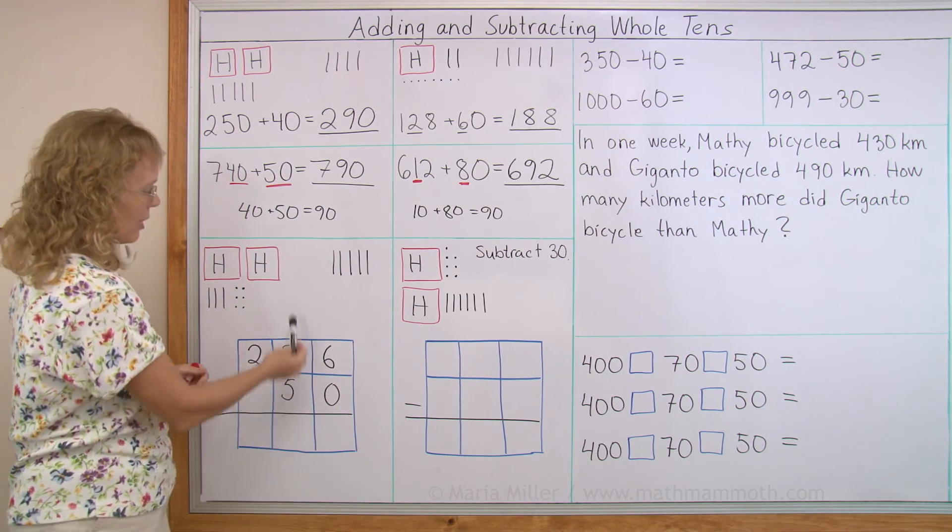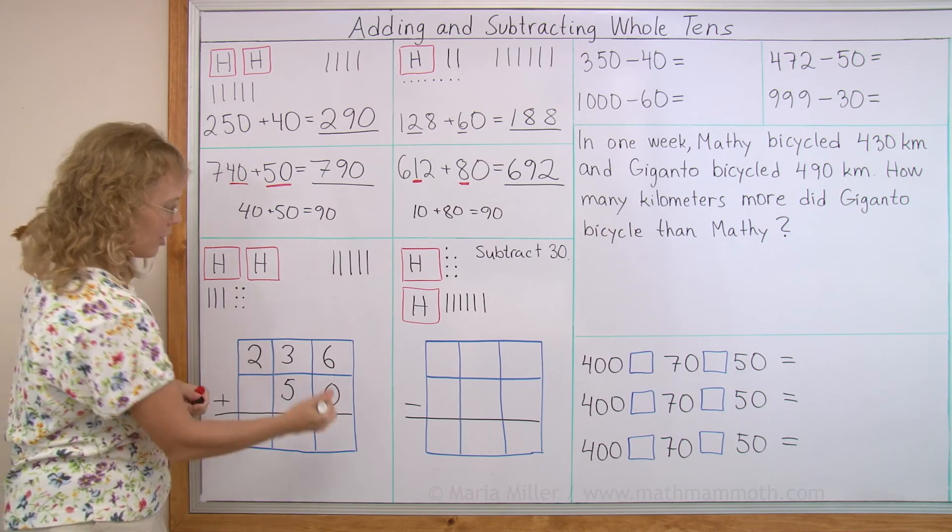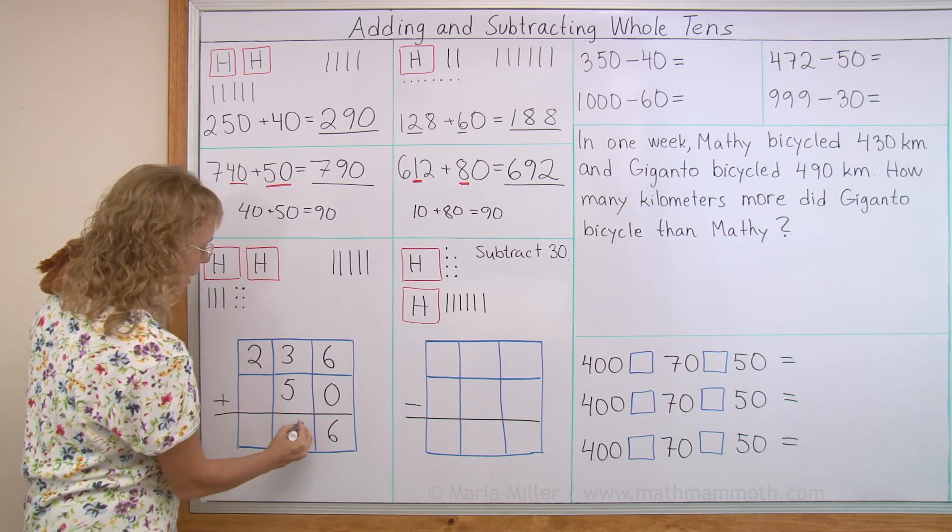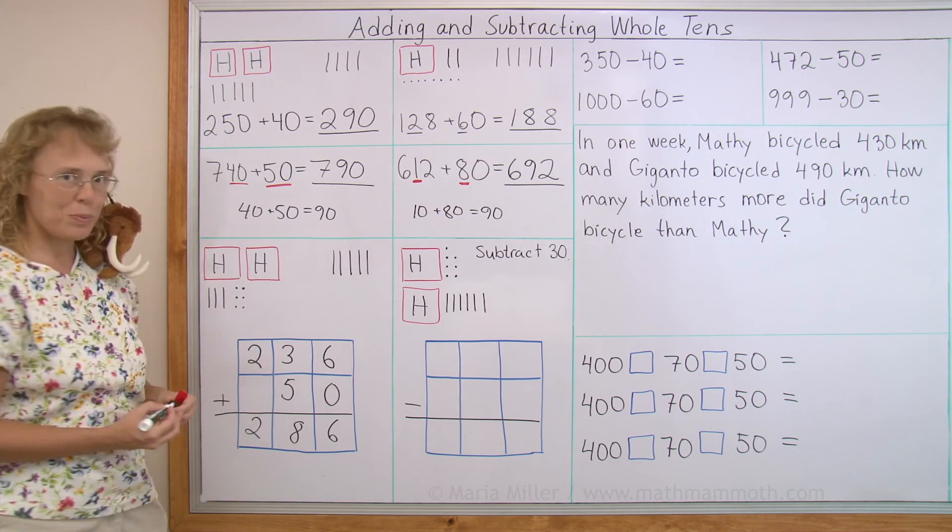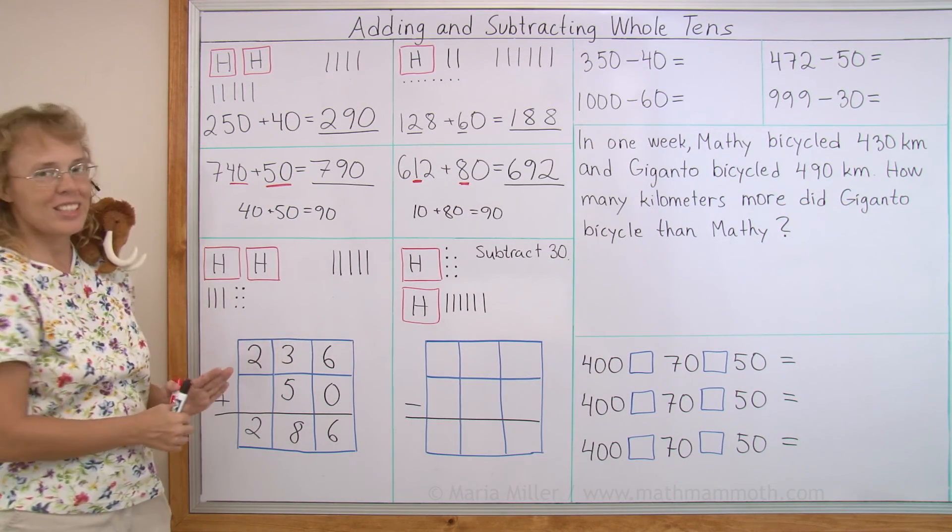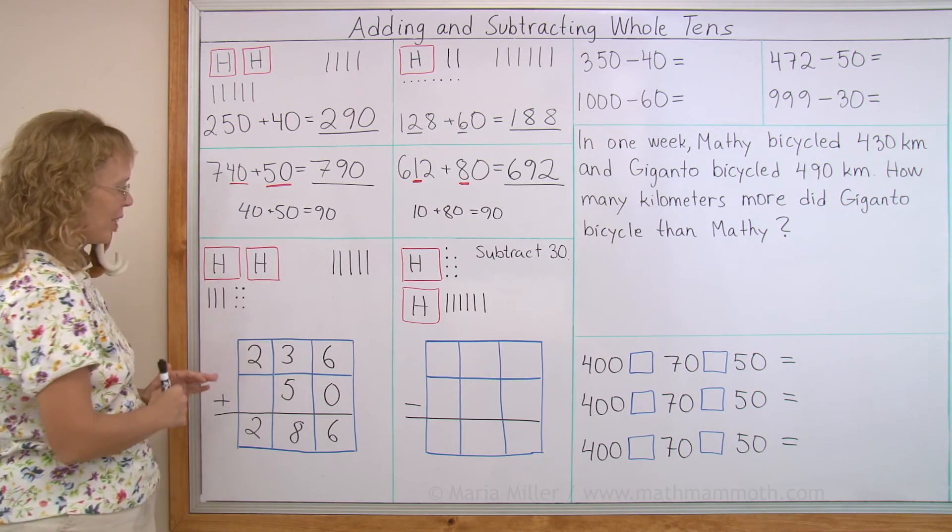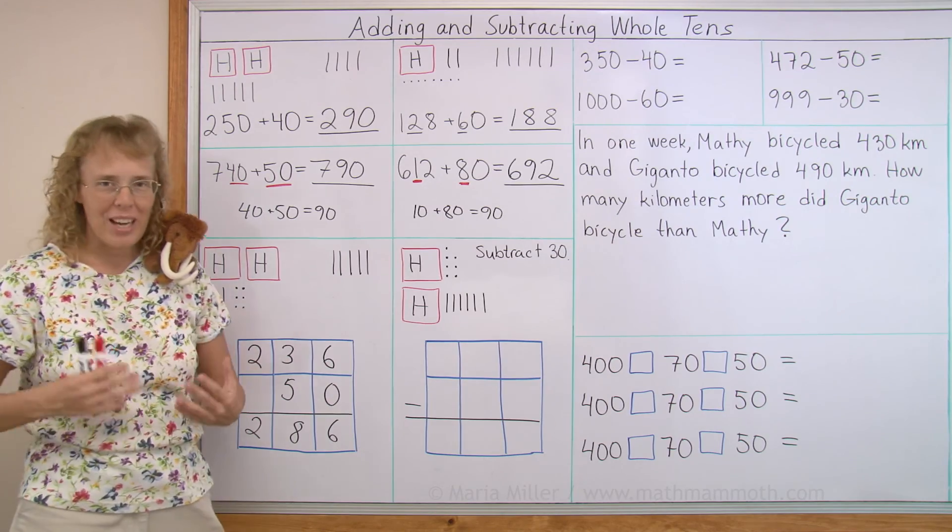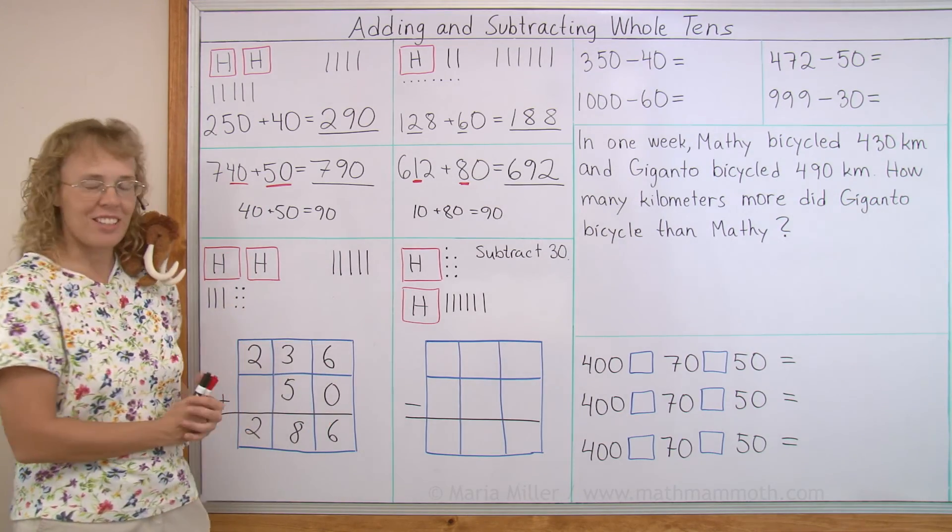Now it's easy to add. You add in the ones, tens and hundreds. So here we get six. Here we get eight. Here we get two. And of course, you could have just read the picture, so to speak, to find this. But we want to also practice writing numbers in the grid, okay?